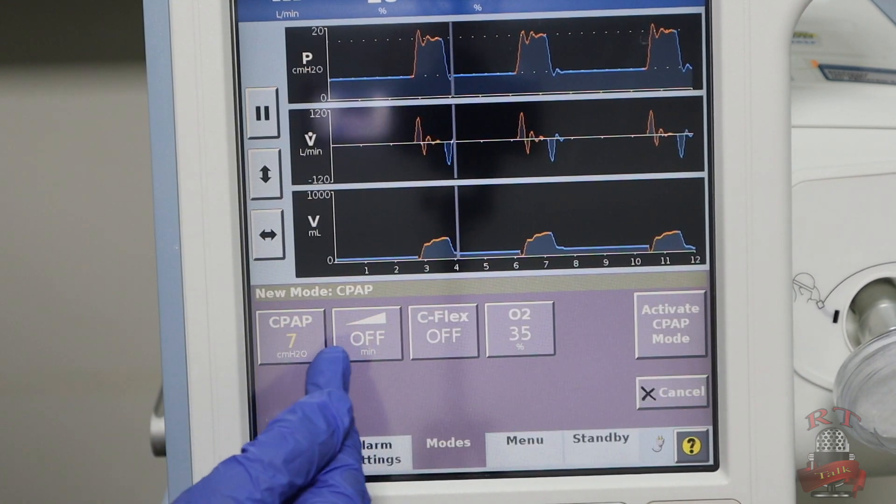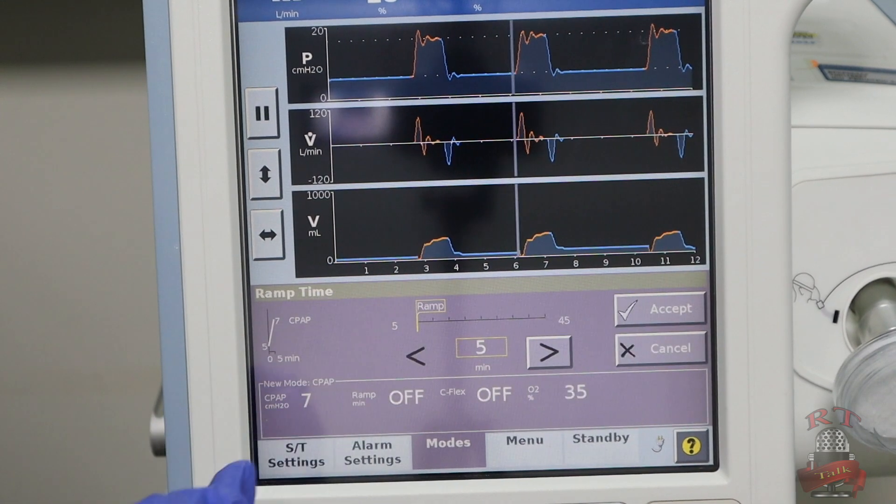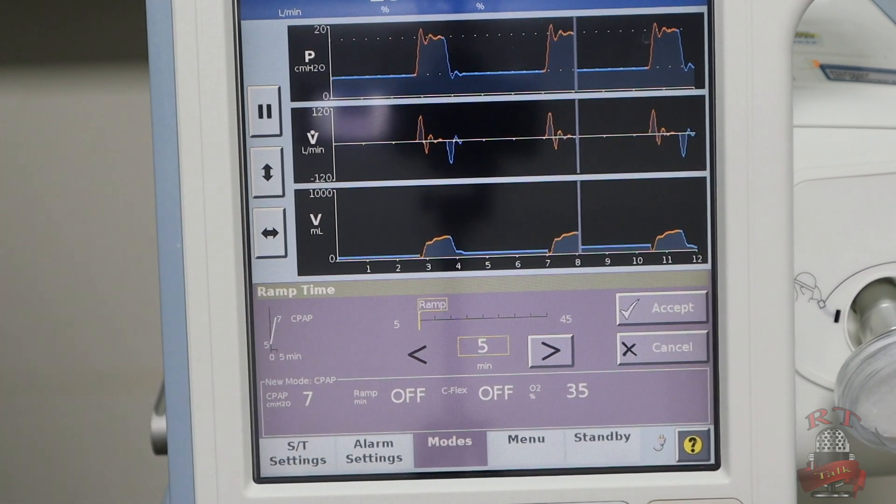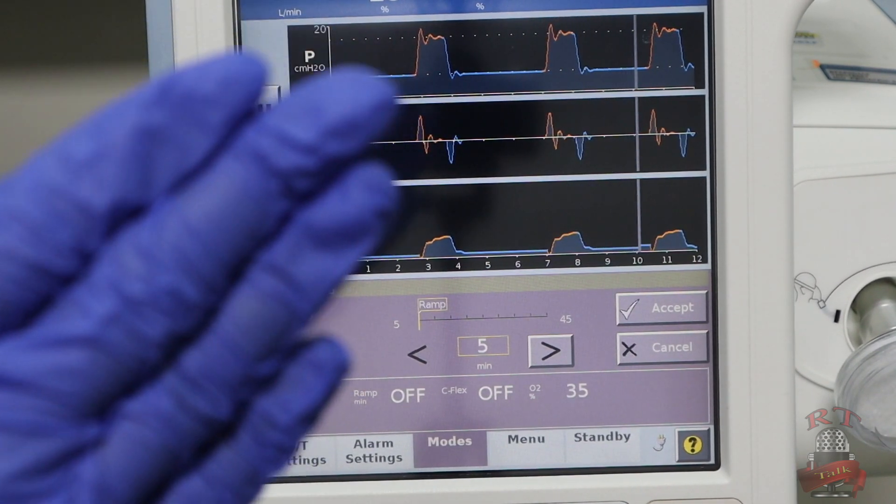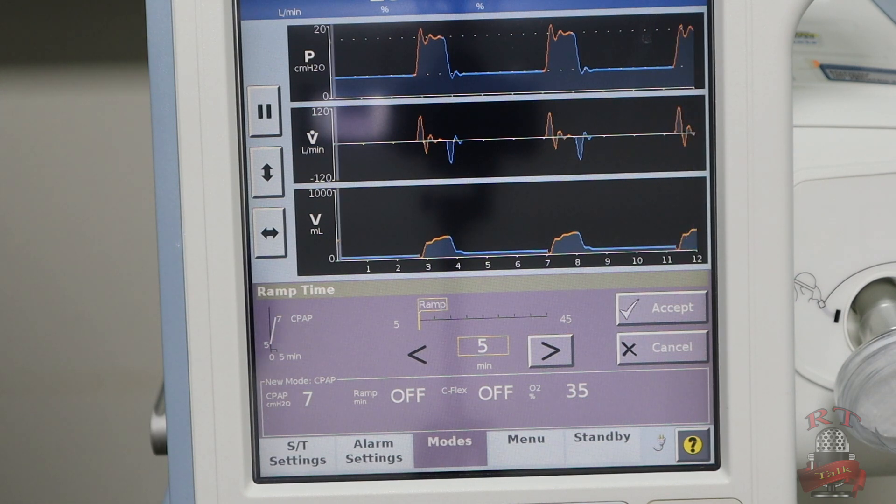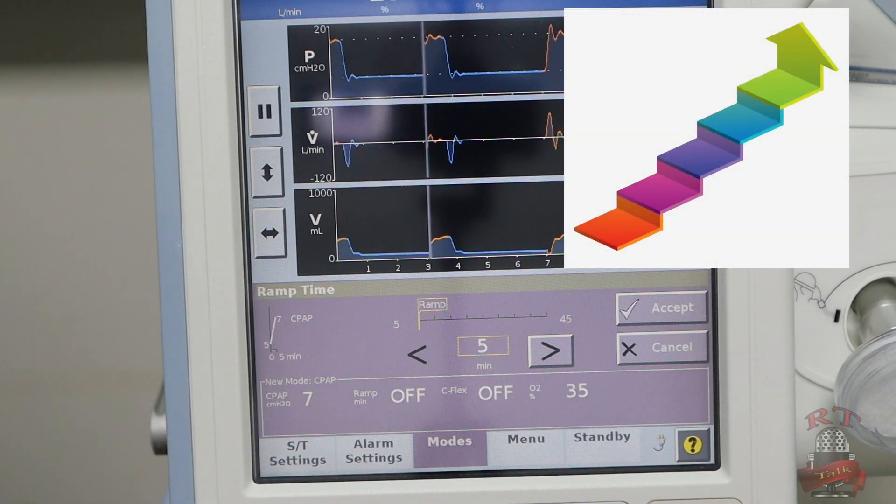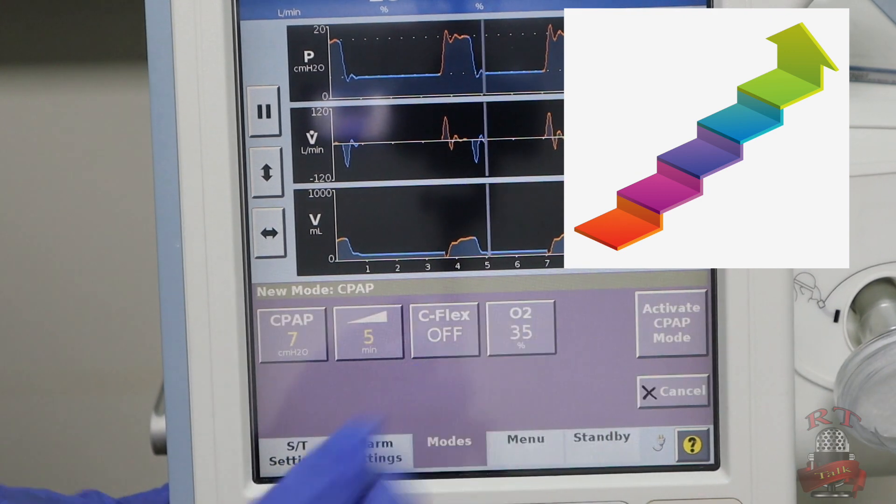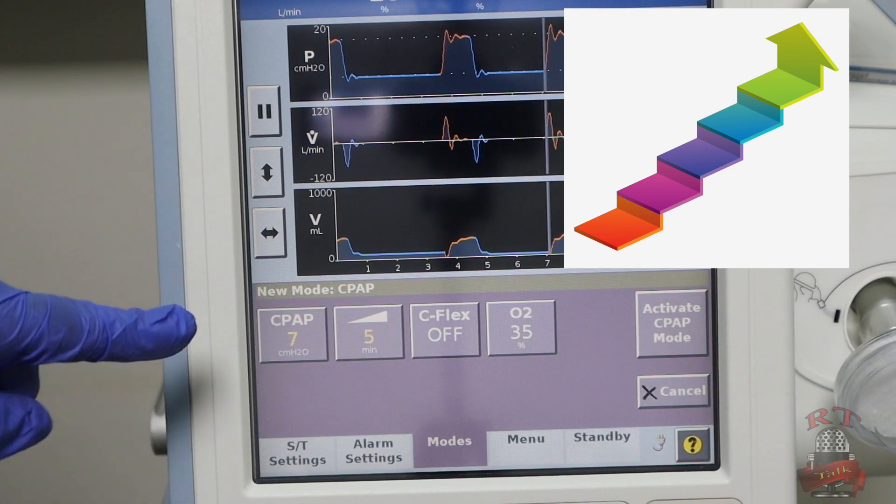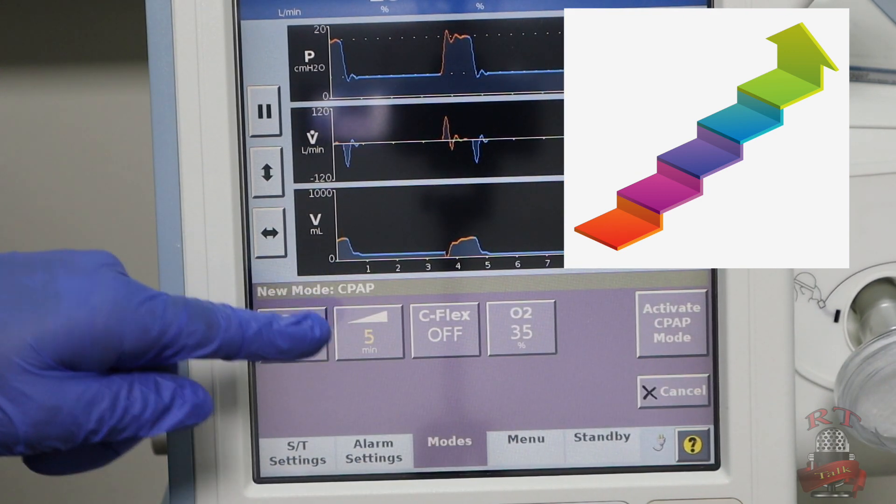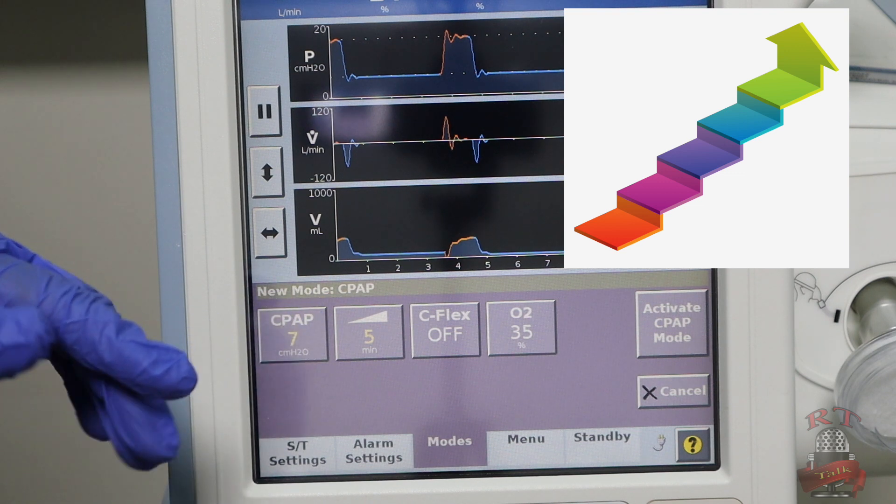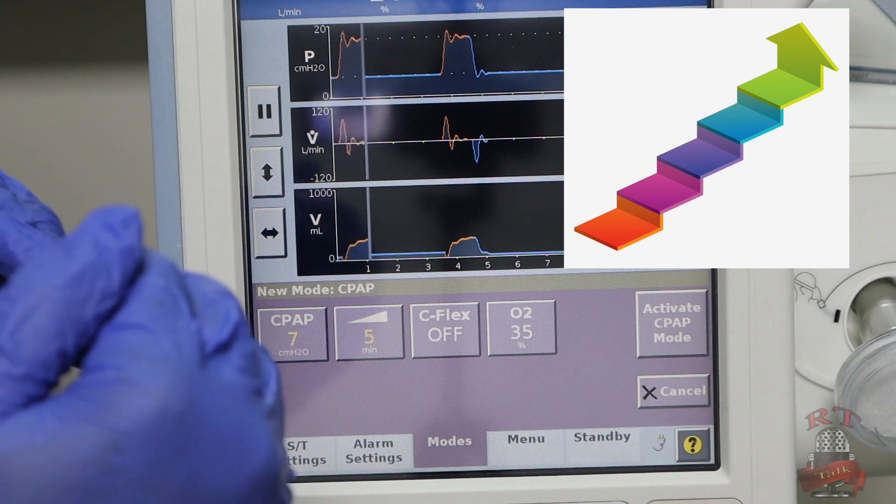The next setting here is the ramp time. Do you want to start your CPAP directly, or you want it to go up gradually? For me, I want it after 5 minutes. So my CPAP now is 7, but the ramp time will let my CPAP start gradually—like 2, 3, 4, 5 within 5 minutes.